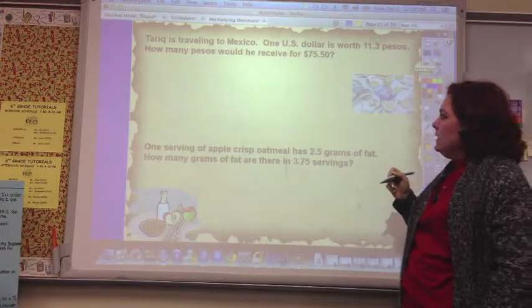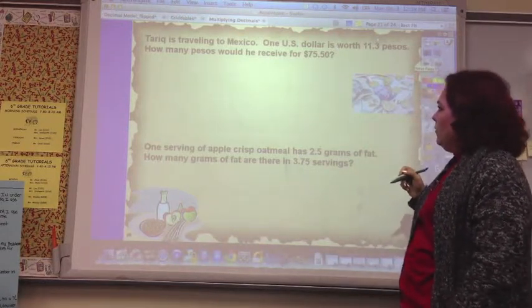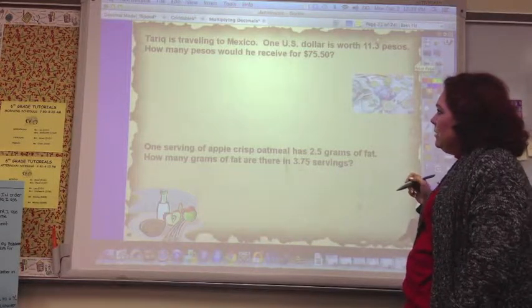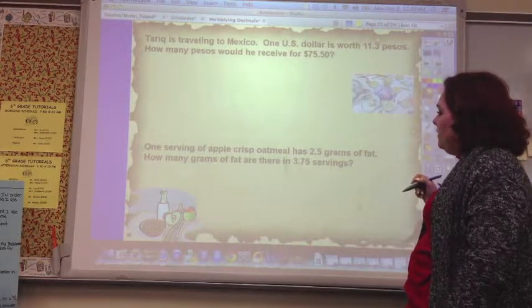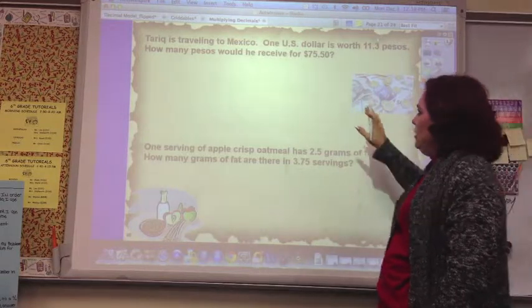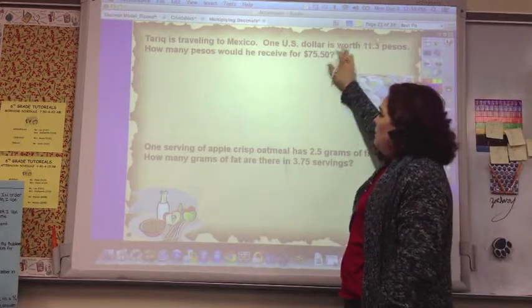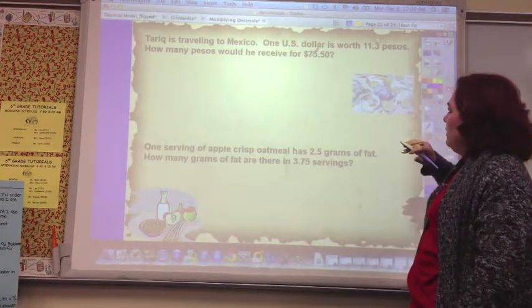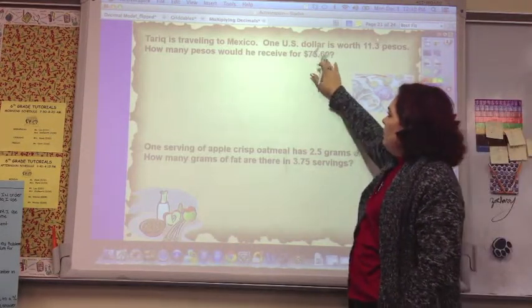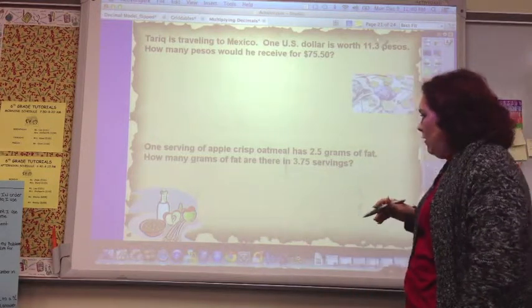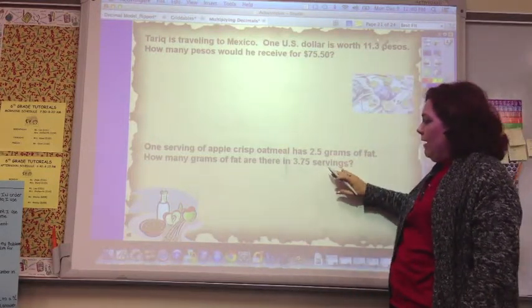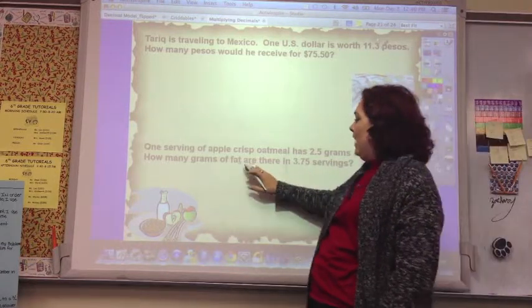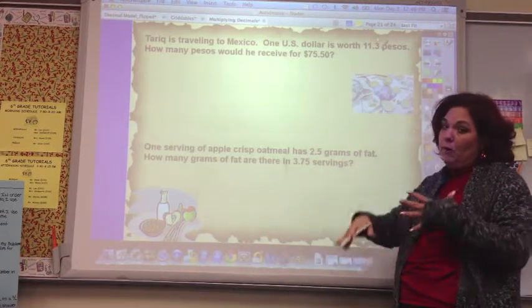So Tariq is traveling to Mexico. One U.S. dollar is worth 11 and 3 tenths pesos. How many pesos would he receive for 75.50? So that's a multiplication because this is worth pesos, and how many pesos would he receive for $75? So you're going to do 75.50 times 11.3, and one serving of apple crisp oatmeal has 2.5 grams of fat. How many grams of fat are there in 3.75 servings? That's multiplication.